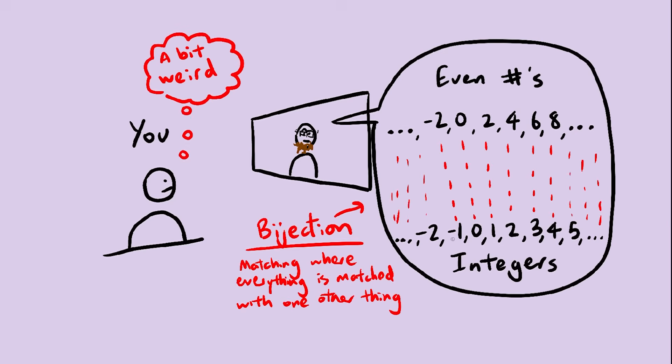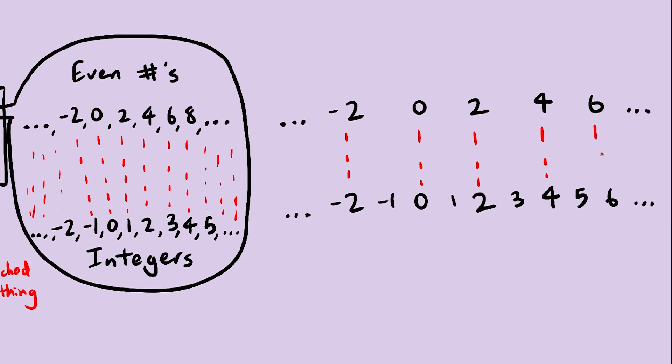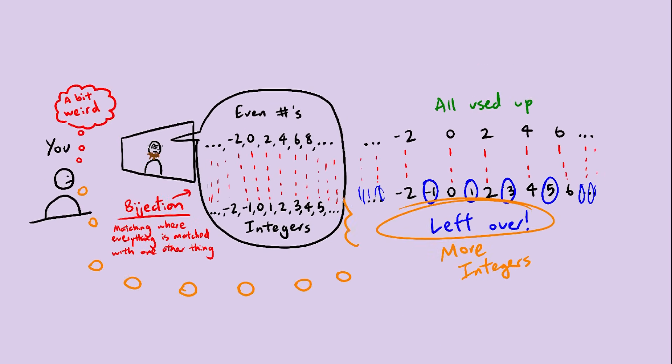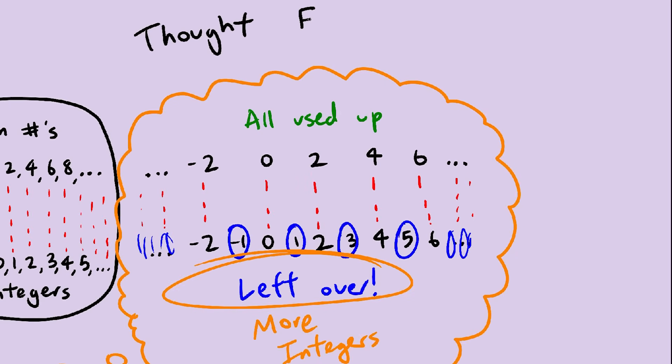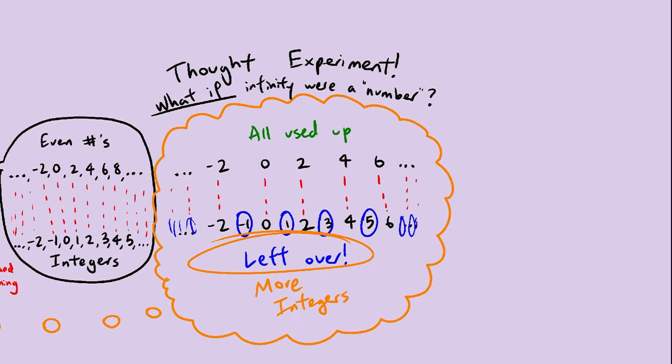And this probably didn't sit right with you, because you can also form a different bijection, and now you have numbers left over, implying that there are more integers. And this probably made more sense to you. So why not, let's just run with whatever makes more sense intuitively, and see if anything interesting comes out of it.